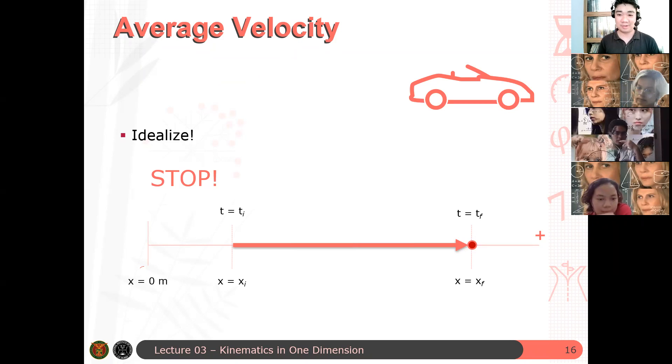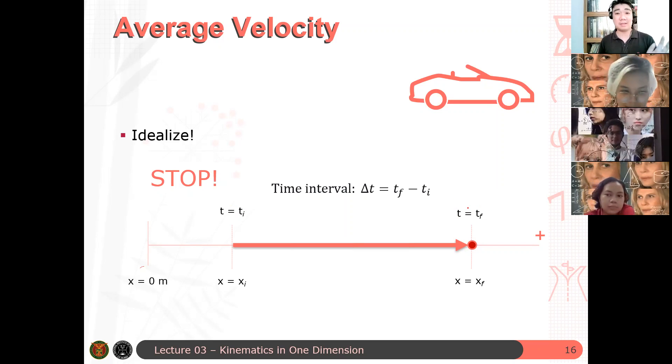And it moved, and it stopped at some point, at some final position x. So it stopped at some direction. Okay. So the time interval here is the change from initial time to some final time. Usually, the initial time is set at zero.